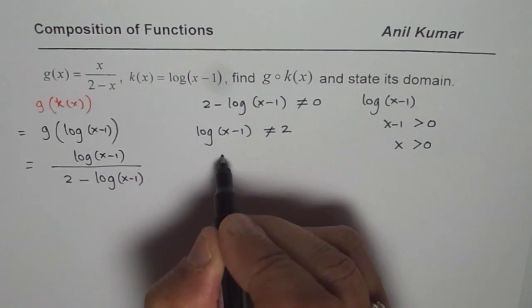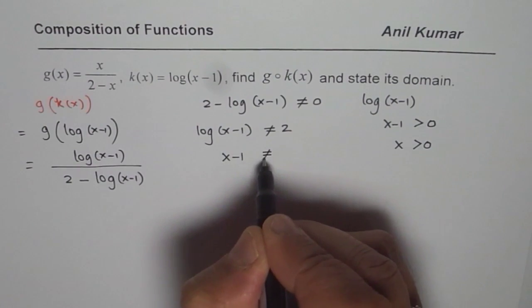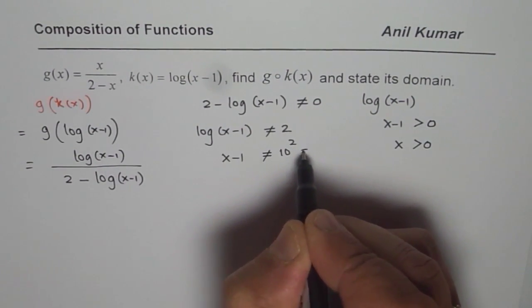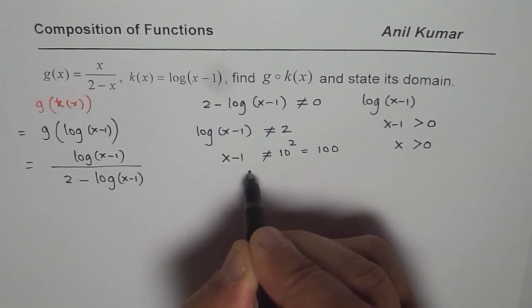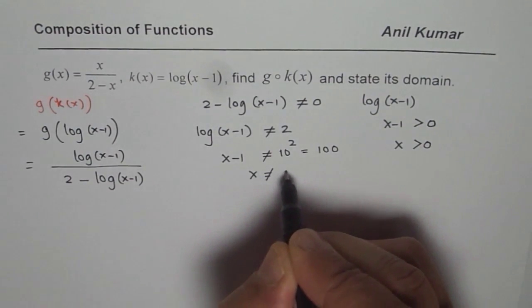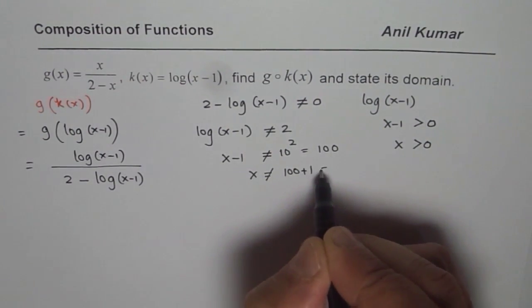So what we get here is log(x-1) is not equal to 2. That means this is to the base 10. So I can write x minus 1 is not equal to 10 to the power of 2 which is 100. So from here I can write x is not equal to 101.